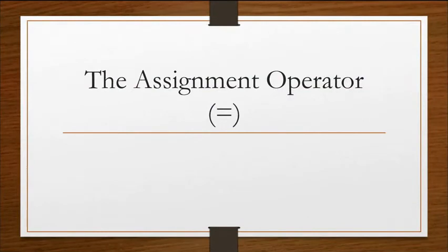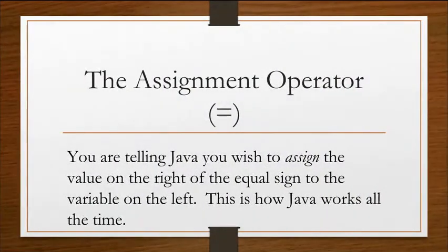The assignment operator. So that equals isn't saying that the two things are equivalent. What it's saying is I'm assigning the value on the right of the equals sign to the variable on the left of the equals sign. And this is how Java works all the time. Anytime you see an equals, you're assigning the value on the right to the variable on the left. And you can't switch the order of these two things. You can't put the number on the left side and the variable on the right side. That won't compile.